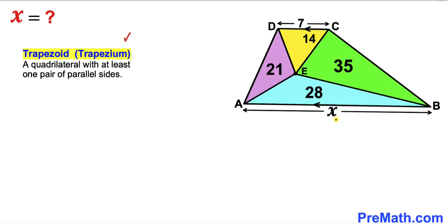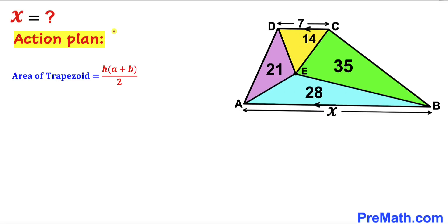As you can see, AB and CD are parallel to each other. Here's our action plan: let's recall the area of a trapezoid. Area equals H times (A plus B) divided by 2, where H represents the height of the trapezoid, and A and B are the bases. In our case, the bases are X and 7.